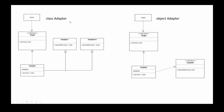We have the class adapter on the left side and the object adapter. The class adapter means the adapter inherits from the adaptee. The adaptee is an object which has a service we as a client want to use but can't. We have the interface and the client calls through the interface the adapter, which prepares the invocation and calls one of these adaptees.